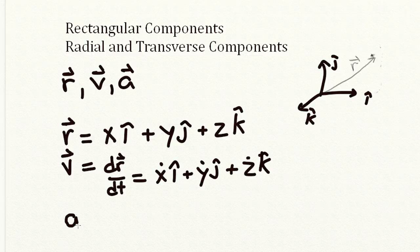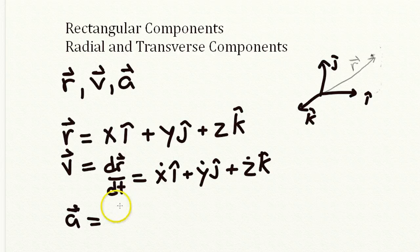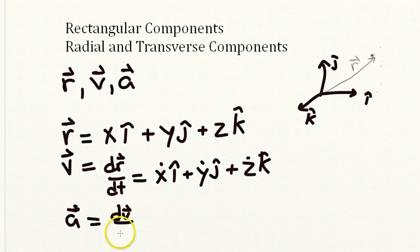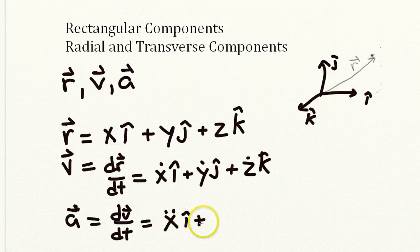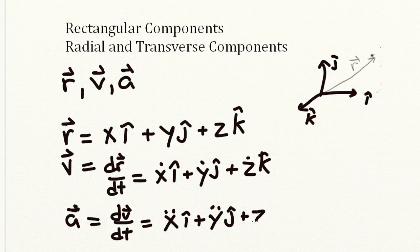Now similarly, we can write for the acceleration, it's the time derivative of the velocity vector, and that's just going to be the second derivative of x in the i-hat direction, plus the second derivative of y in the j-hat direction, plus the second derivative of z in the k-hat direction.